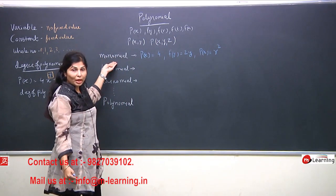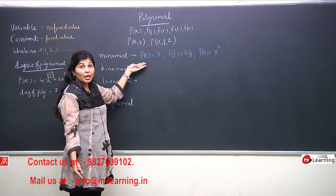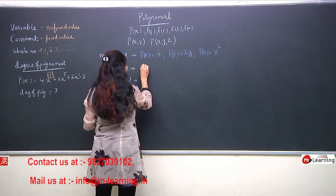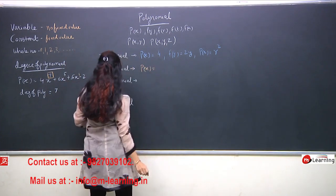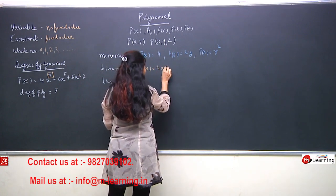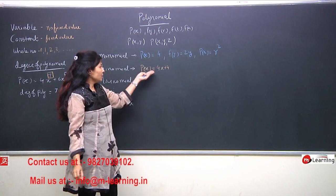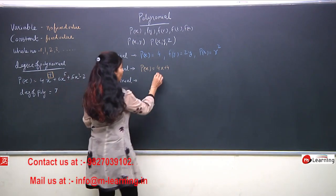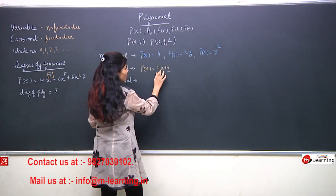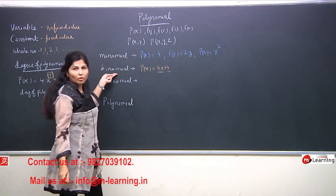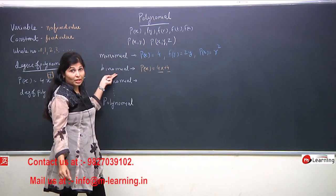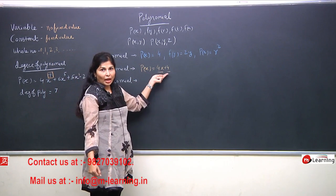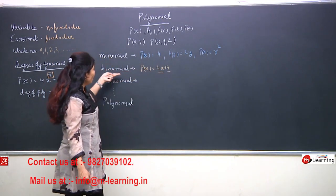So, friends, monomial means a polynomial that has only one term. Now let's take some examples of binomial. Like, polynomial Px equals 4x plus 4. How many terms do you see here? Two terms: 4x and 4. So this is an example of a binomial. Binomial means polynomials that have exactly 2 terms — not one, not three, only 2 terms, which here are 4x and 4. So this polynomial is called a binomial.